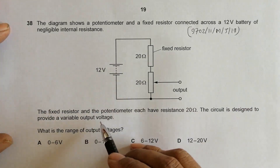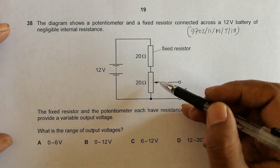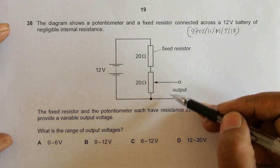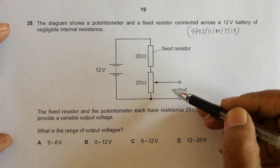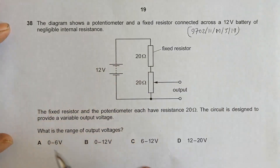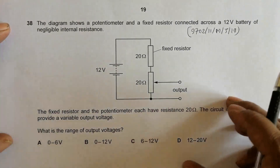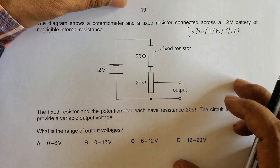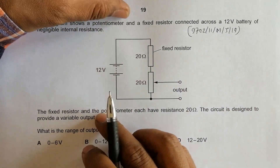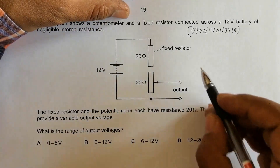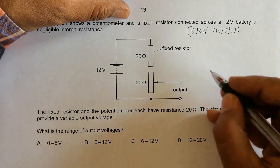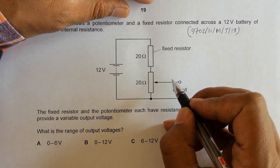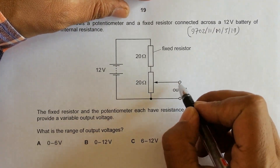The circuit is designed to provide a variable output voltage. If I change the slider position, the output voltage will be different. The question asks: what is the range of output voltage? This requires us to consider two extreme conditions.